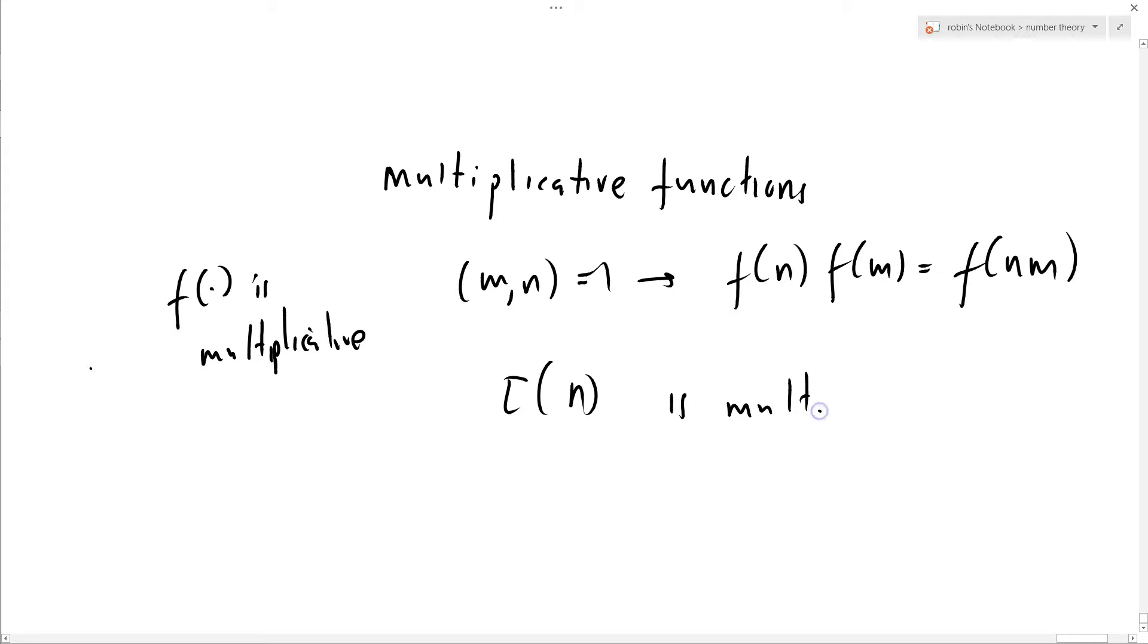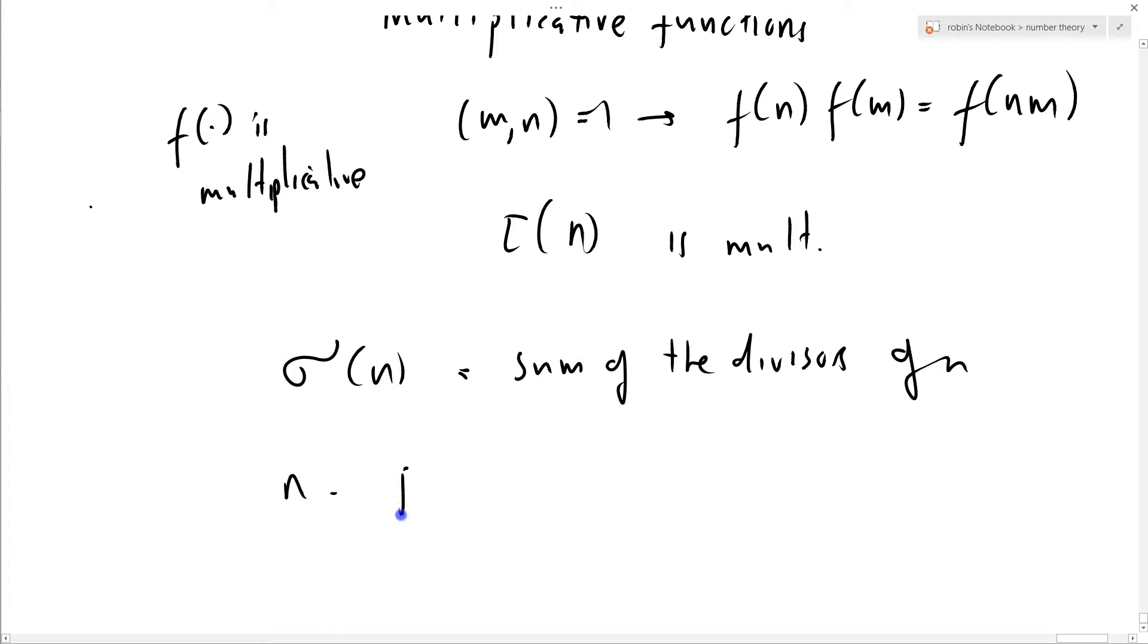What about sigma of n? You'll remember that equals the sum of the divisors of n. And we had a nice little formula for this. If n equals p1 to the alpha 1, p2 to the alpha 2, up to pr to the alpha r, where the pi are distinct primes.